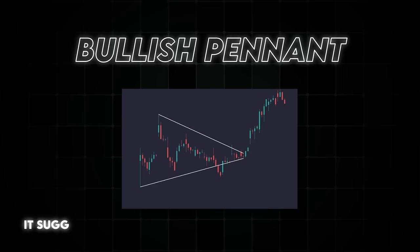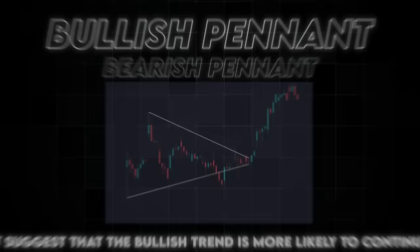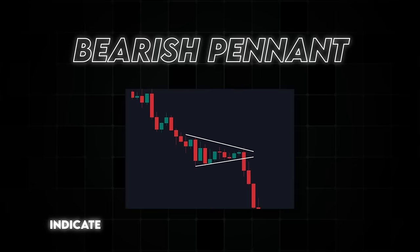Next we have what are called pennants — bullish and bearish. A bullish pennant resembles a small symmetrical triangle appearing during a steep upward trend, suggesting the bullish trend is likely to continue. A bearish pennant occurs in a downward trend resembling an upside-down symmetrical triangle, indicating the continuation of bearish momentum.